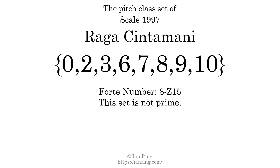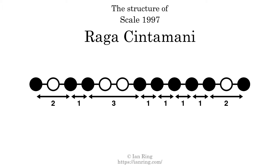The structure of a scale is a description of the interval distance between each successive tone. This scale has a structure of 2, 1, 3, 1, 1, 1, 1, 2.